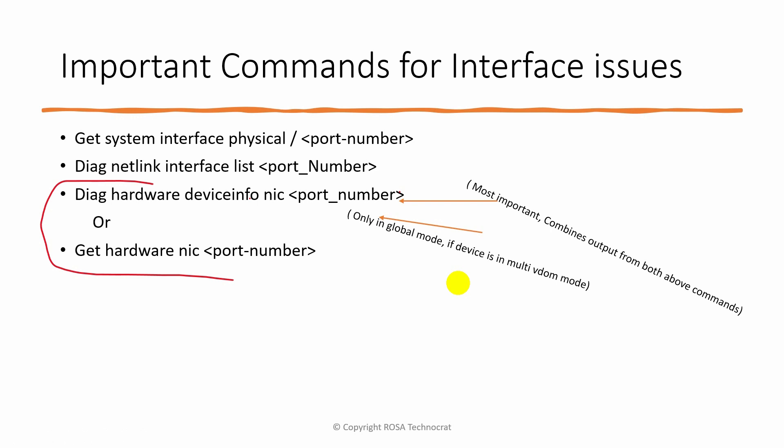The important commands when troubleshooting an interface are these ones. If you know all these commands, that will be enough to know what might be causing an interface to flap or go down, or if there are any packet drop issues. The first command is 'get system interface physical,' which tells you the current physical status of the interface — whether it's up or down, the speed and duplex — a summary at the physical level. Then we have 'diag netlink interface list,' which gives more detail.